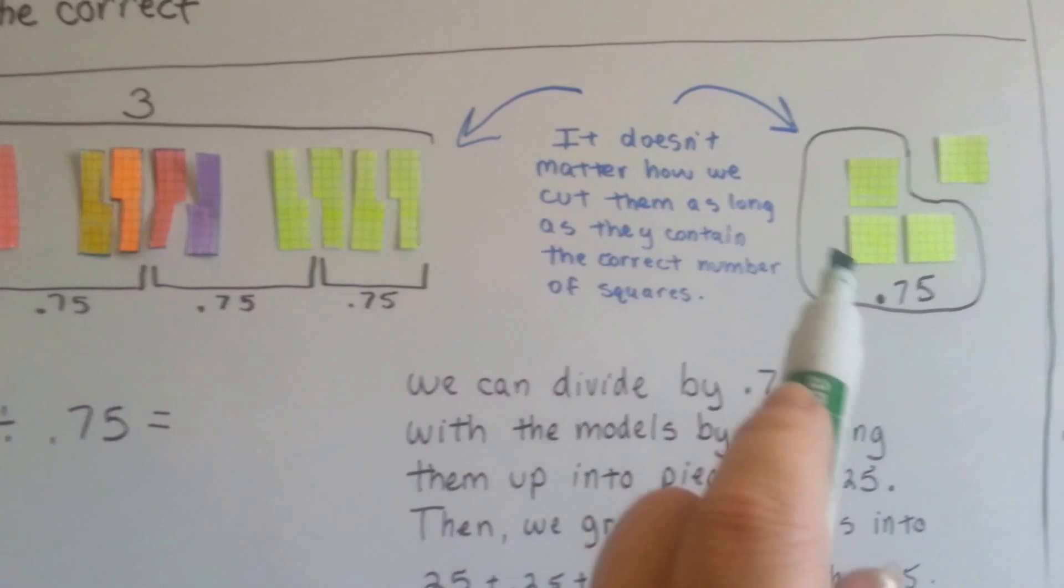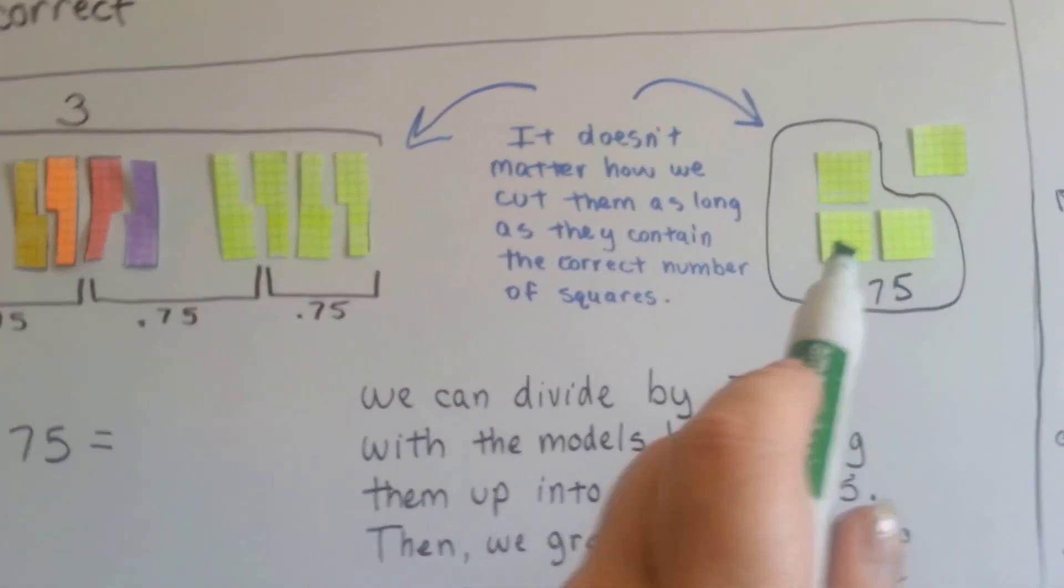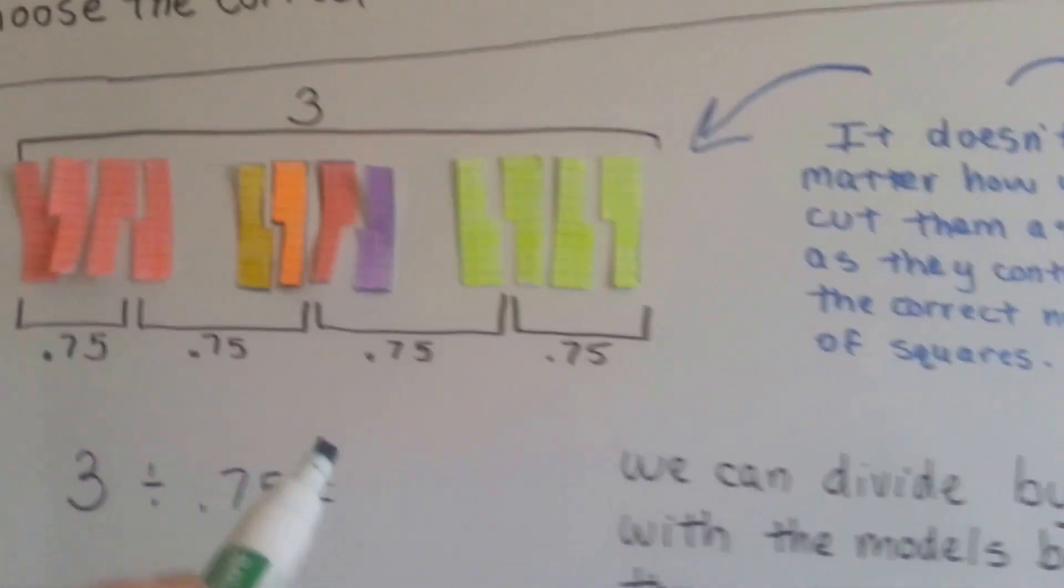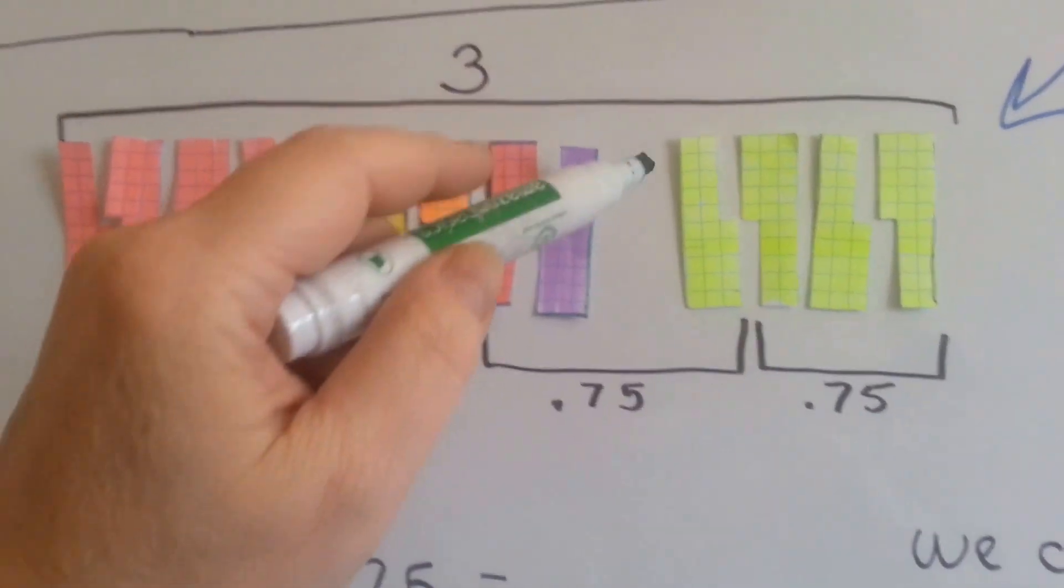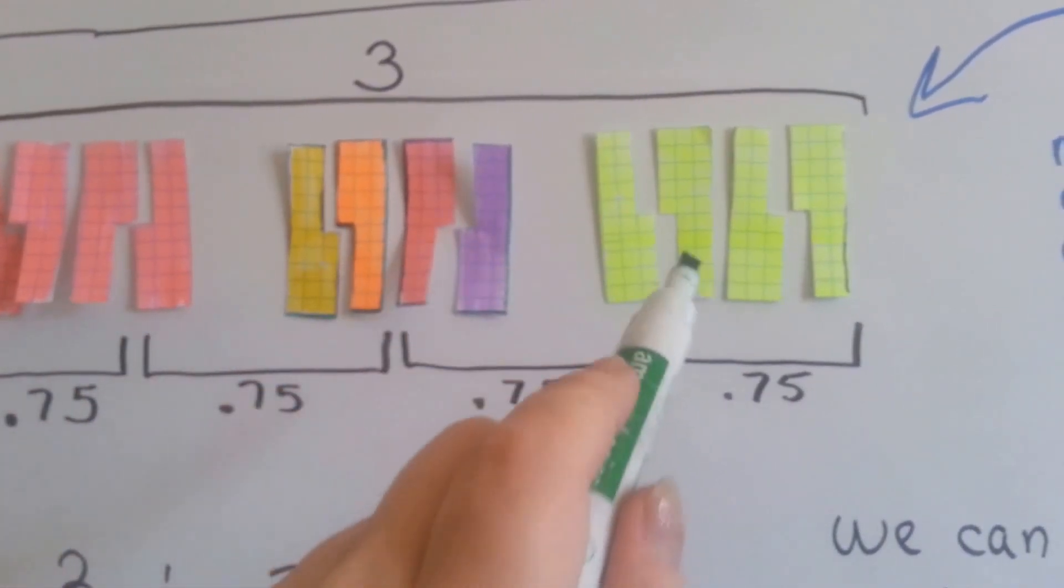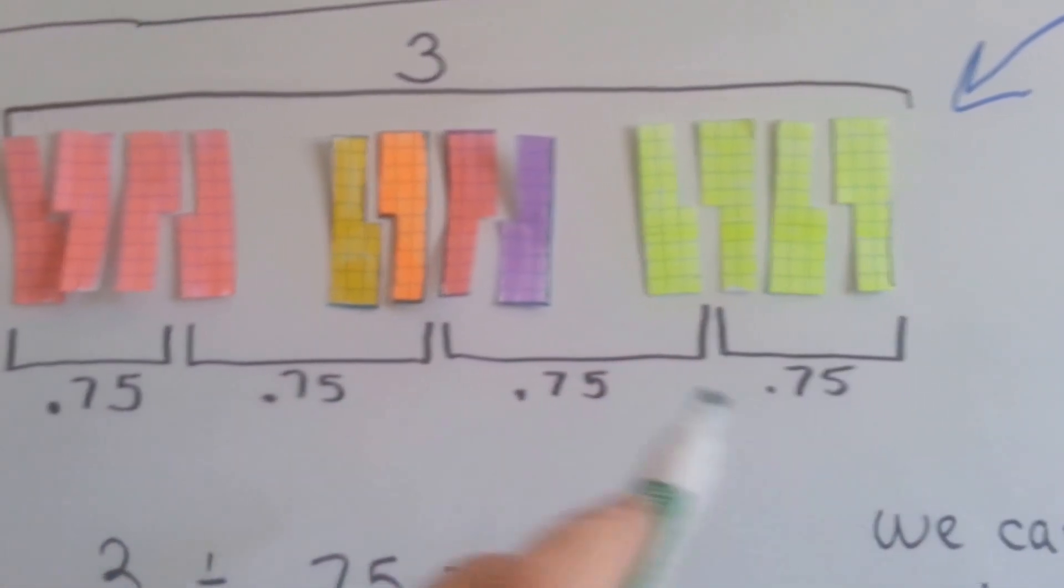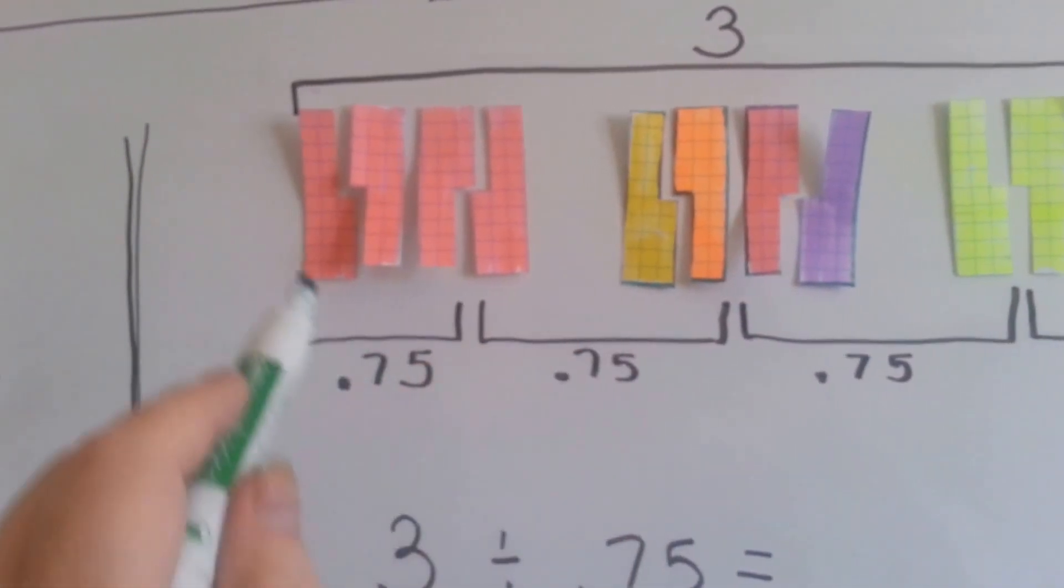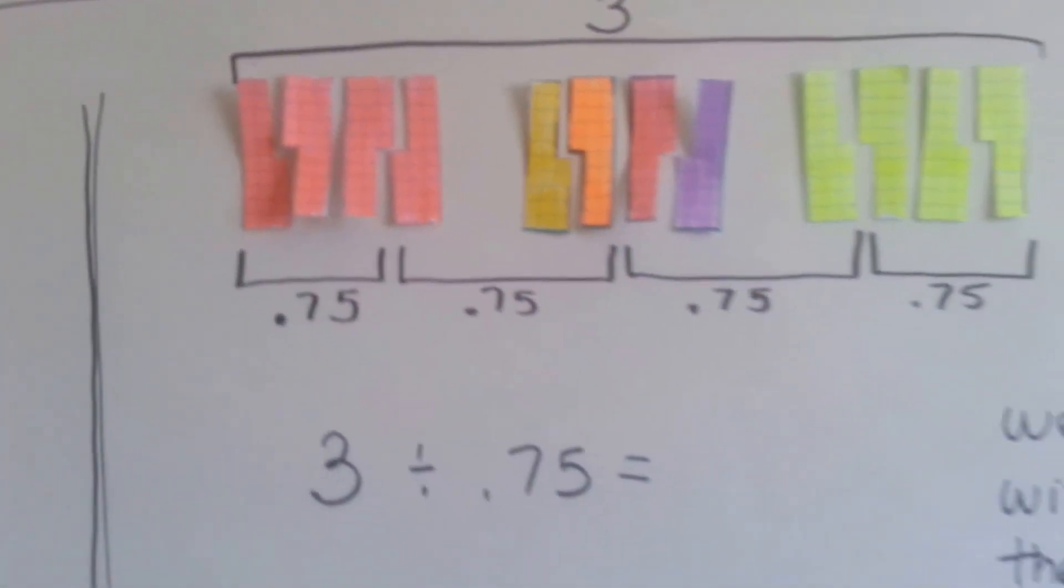And it doesn't matter how I cut them. I could have cut the square card of a hundred into four like this, or I could have cut the square card into lengths of ten, twenty, and then five, so that three of them were 75 hundredths, another three were 75 hundredths, another three were 75 hundredths, and then another three were 75 hundredths. So that would tell me that the answer is four.